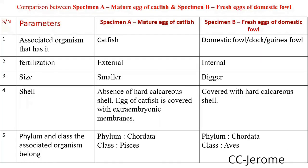Comparison between the egg of a catfish and that of a domestic fowl. The associated organisms of catfish, while that of domestic fowl, we have domestic fowl, dog or guinea fowl. Fertilization is external in catfish, while in the egg it is internal. Smaller in size versus bigger in size in domestic fowl. You can look at the slide and identify what is written there.